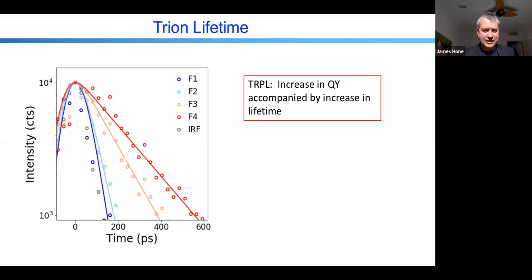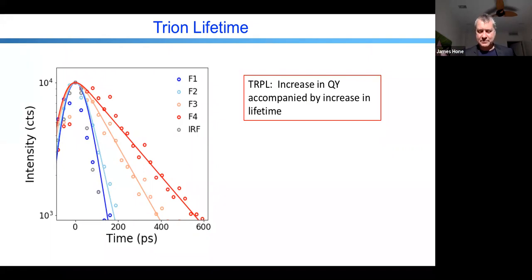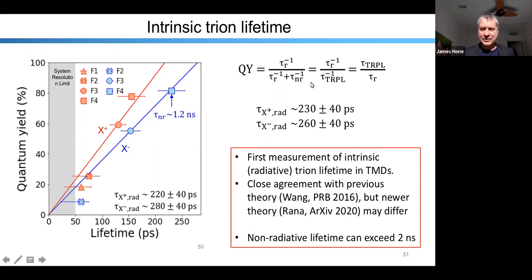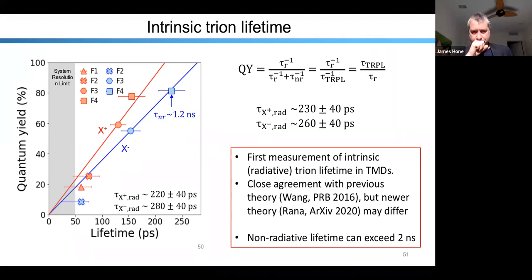We can also look at time-resolved photoluminescence of our trion peak. The increase in quantum yield is accompanied by an increase in lifetime. Because we can measure both the quantum yield and the lifetime, we can plug into very simple theory and extract both the radiative lifetime and the non-radiative lifetime. We measure the trion radiative lifetime to be about 250 picoseconds, and we see that the non-radiative lifetime is sample-dependent but can exceed one to two nanoseconds.